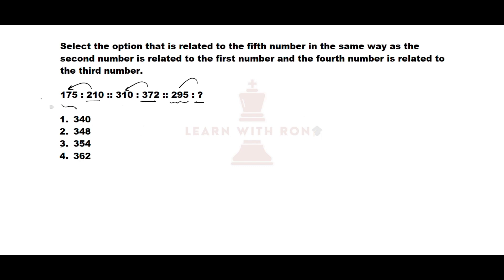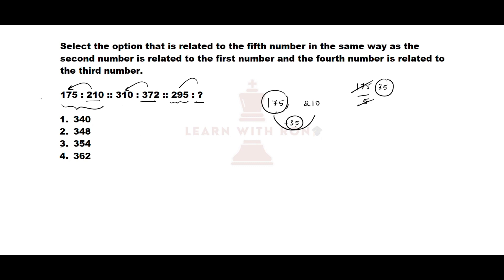First, let us take the first two numbers 175 and 210. If you observe the difference here, what is the difference between 210 and 175? 25 plus 10, which is 35. You can also observe that 35 is nothing but one-fifth of 175. So 175 divided by 5 is 35, and that is what they added to 175 to get the resulting number. What they have done is 175 divided by 5, plus 175, which gave them the second number.